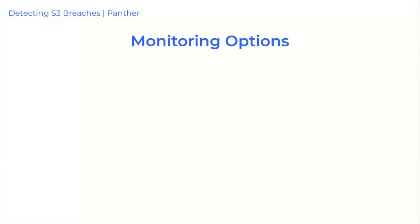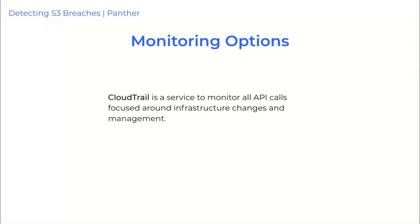Coming back to S3, there are two real options when it comes to understanding traffic. The first one is looking at CloudTrail. CloudTrail is a service that monitors AWS API management events, like creating users, creating buckets, creating instances, and things like that.